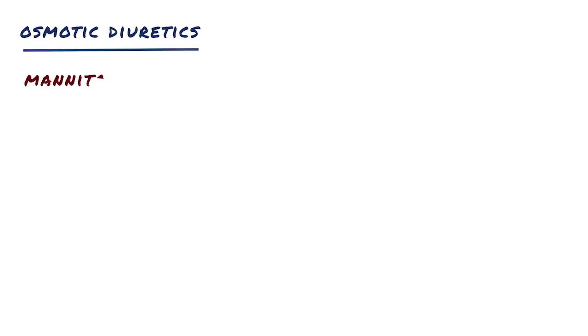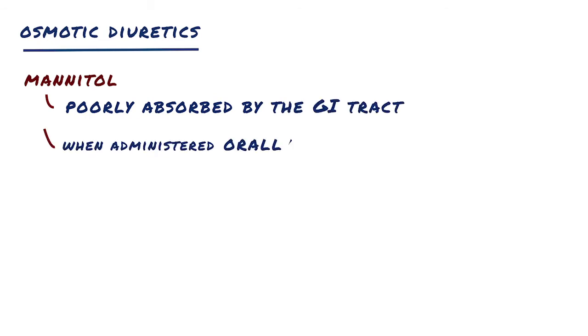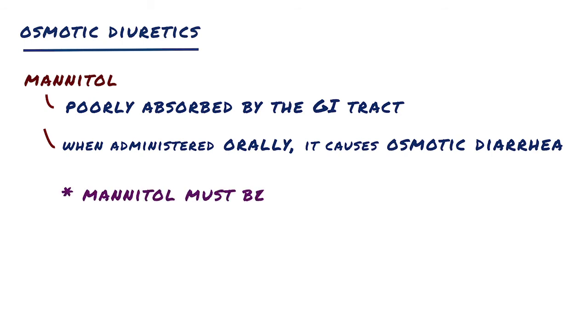The prototypic osmotic diuretic is mannitol. Mannitol is poorly absorbed by the gastrointestinal tract, and when administered orally, it causes osmotic diarrhea rather than diuresis. For systemic effect, mannitol must be given intravenously.